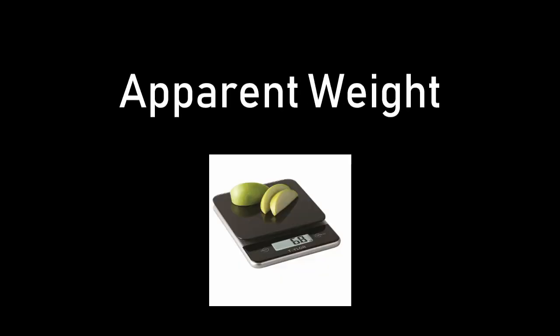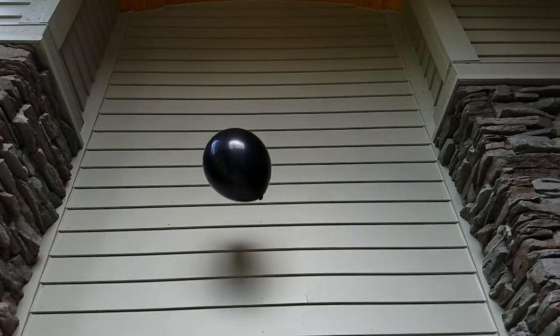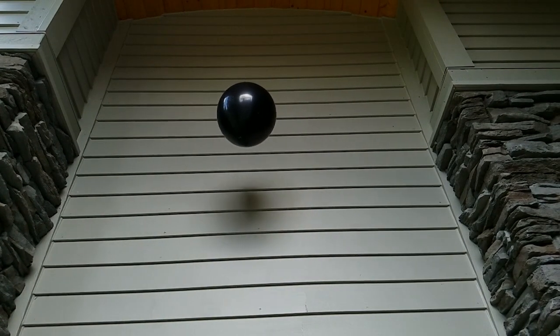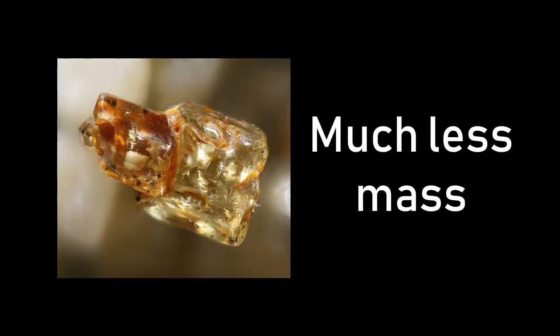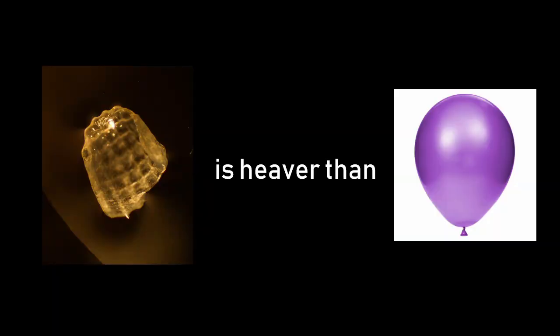Heaviness is about feeling. It's about appearance. Heaviness generally refers to apparent weight — what a scale would read from the object in question. A helium balloon that floats up has a negative apparent weight because of buoyancy. A grain of sand is light and has much less mass, but nevertheless has a positive apparent weight. This means that a grain of sand is indeed heavier than a helium balloon, even though it doesn't weigh more.